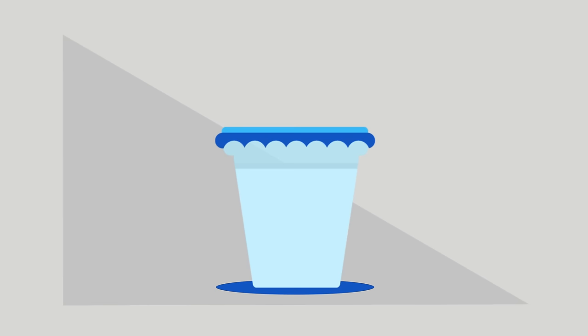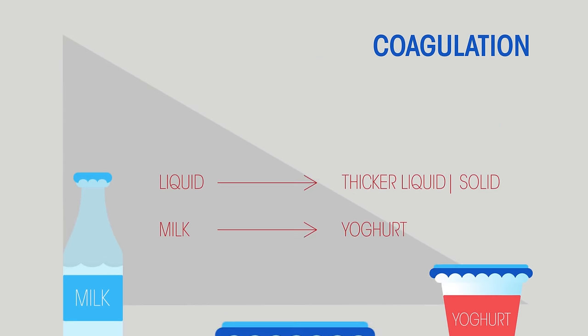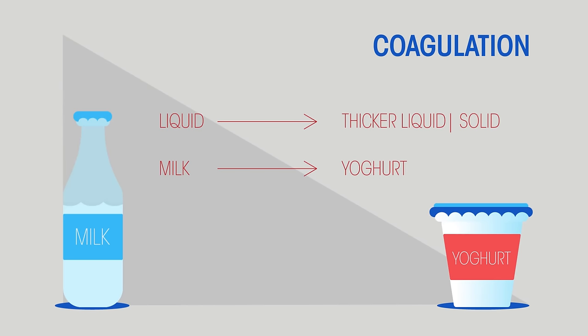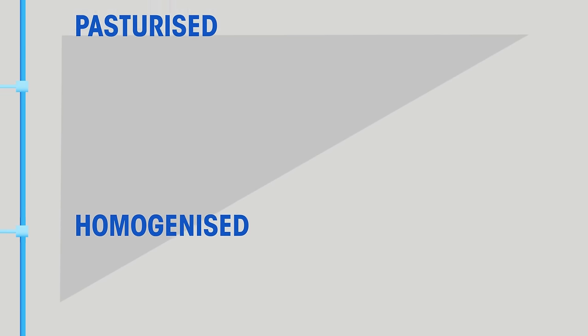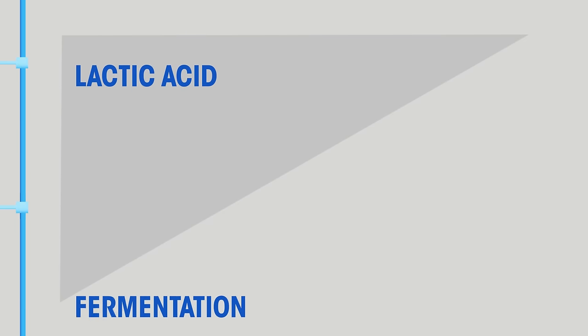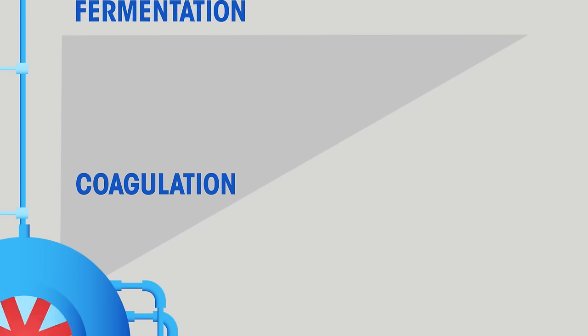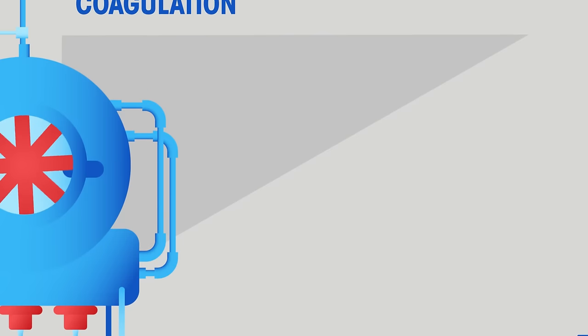The solidification happens because the proteins begin to coagulate. Coagulation is when something which is liquid turns into a more solid state. So we've sterilized our equipment, then pasteurized and homogenized the milk, added lactic acid bacteria so fermentation happens, and then coagulation.